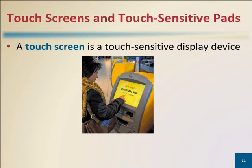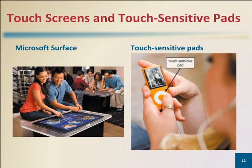A touch screen is a touch-sensitive display device. Users interact with these devices by touching areas of the screen. Touch-sensitive pads on a portable media player enable users to scroll through and play music, view pictures, watch videos or movies, adjust volume, and customize settings.